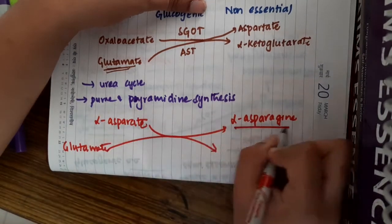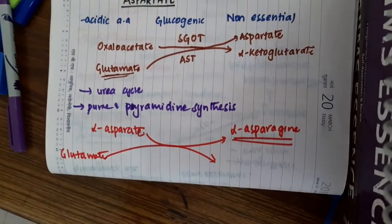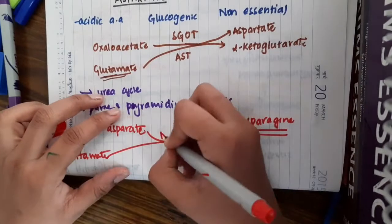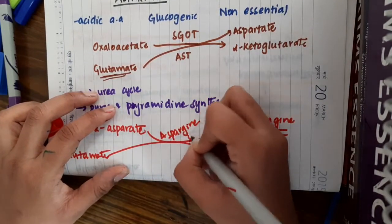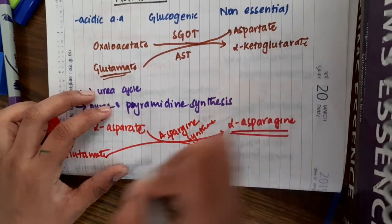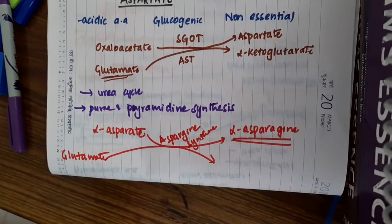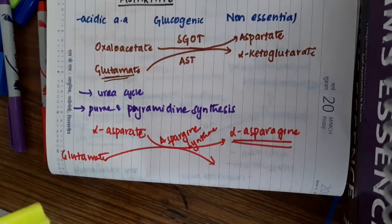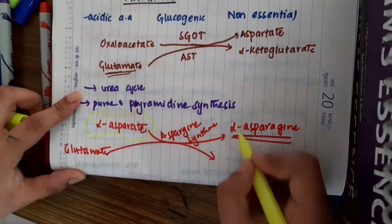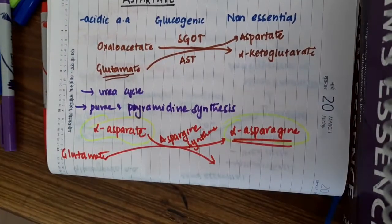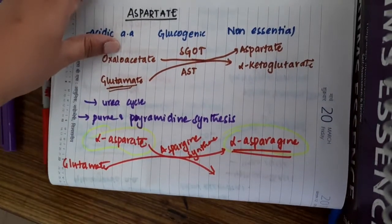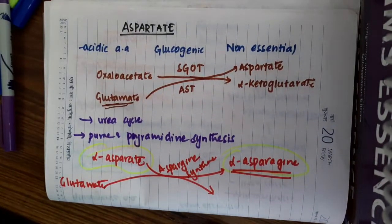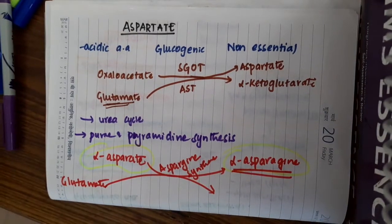This L-asparagine is synthesized by this process and the enzyme here is asparagine synthase. You should remember, you don't need to know this pathway. What you should remember is that L-aspartate gives rise to L-asparagine. This is about the amino acid aspartate. Thank you guys for watching my lecture.